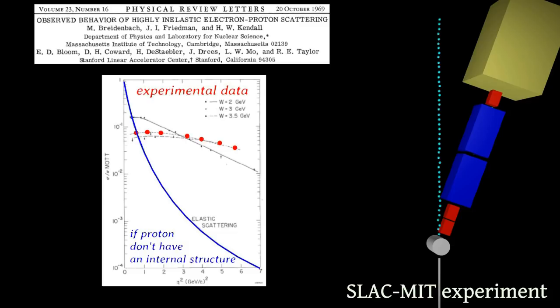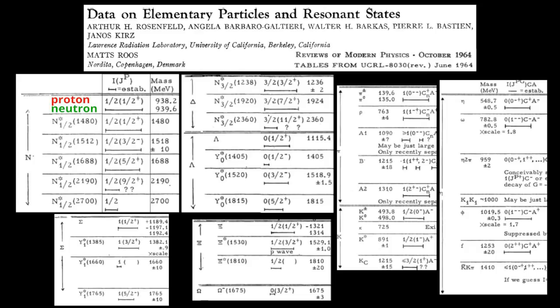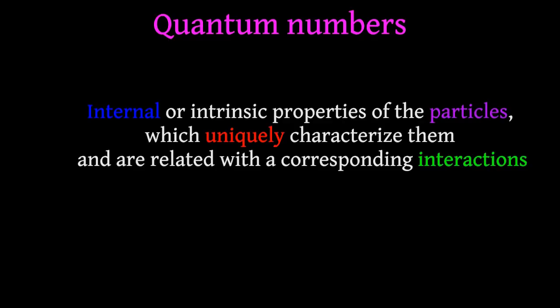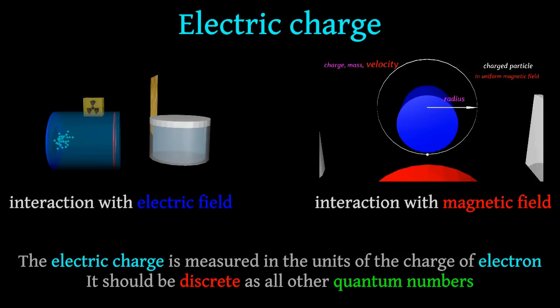By the time of the SLAC-MIT experiment, scientists already had some ideas about how the proton and other subatomic particles are built. All discovered subatomic particles have quite similar properties — they differ only in a few internal or intrinsic characteristics. Each particle has a number of such internal properties, or quantum numbers, which uniquely characterize them and are related to corresponding interactions. For example, the electric charge is one such characteristic. The electric charge is measured in units of the charge of the electron and should be discrete, like all other quantum numbers. Another important example is the intrinsic angular momentum of a particle, called the spin.